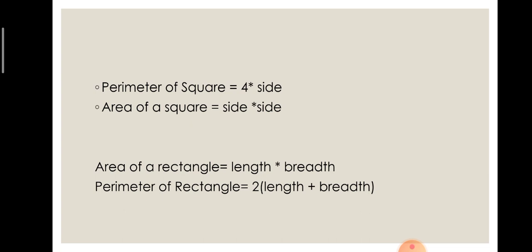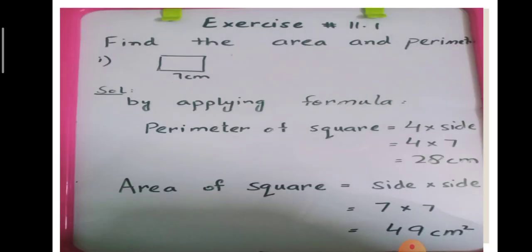Now first of all we do question number one. Find the area and perimeter of the following squares and rectangles. First we start part number one. Here is 7 centimeter and your shape is square. So by applying formula, perimeter of square equal to 4 multiply by side, so 4 multiply by 7 equal to 28 centimeter. Area of square equal to side multiply by side, so 7 multiply by 7 equal to 49 centimeter square.